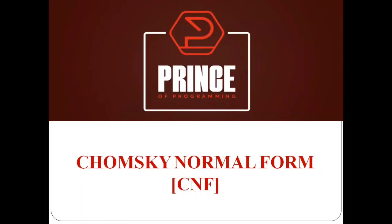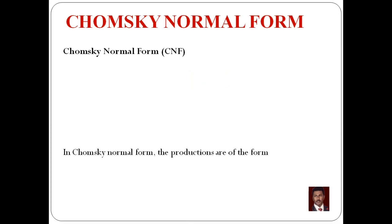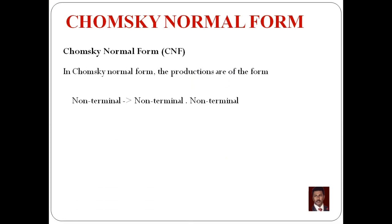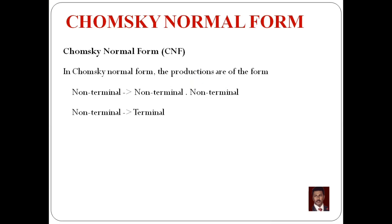Today we will talk about the topic Chomsky Normal Form, abbreviated as CNF. Chomsky Normal Form is defined by productions in a specific format. For example, a non-terminal tends to two non-terminals (A→BC), or a non-terminal tends to a single terminal (A→a). Every production either has two non-terminals on the right side or one single terminal.